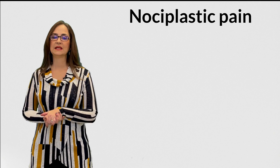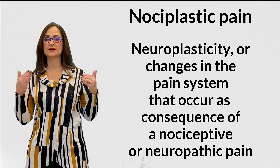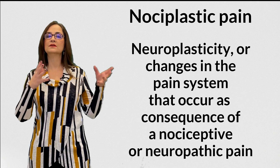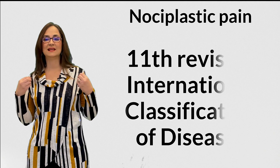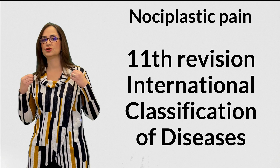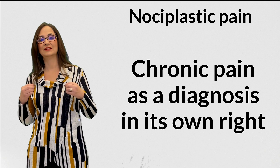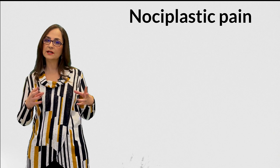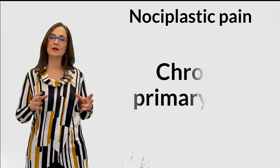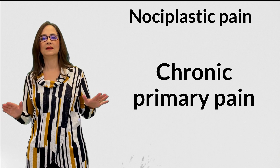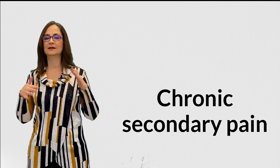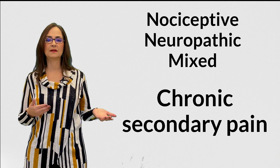Now let's talk about the third type of pain: nociplastic pain. This pain is caused by neuroplasticity, or changes in the pain system that occur as a consequence of nociceptive or neuropathic pain. The World Health Organization, in its 11th revision of the International Classification of Diseases (ICD-11), includes chronic pain as a diagnosis in its own right. Chronic primary pain refers to pain that exists despite complete tissue healing, or pain that has no identifiable cause — this is nociplastic pain. Chronic secondary pain occurs in association with an underlying disease and can be nociceptive, neuropathic, or mixed.